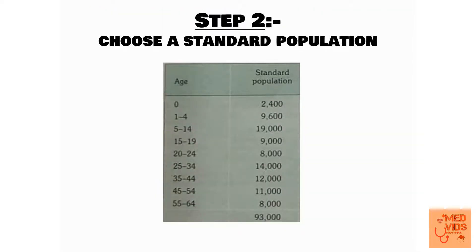Step 2 is to choose a standard population. The standard population is given by WHO, or you can use the country's population in which you are studying. For example, if you are studying the death rates of Assam in India, you can take India's population as the standard population. In this table you can see a standard population given by WHO.